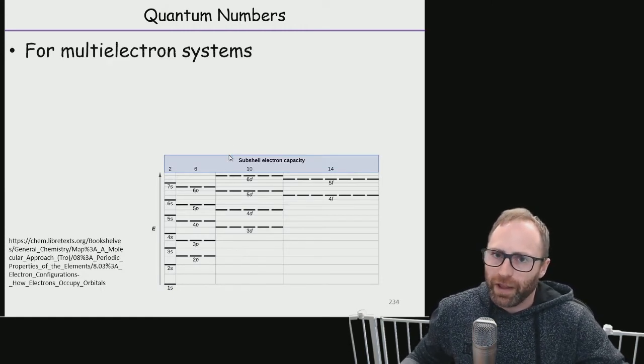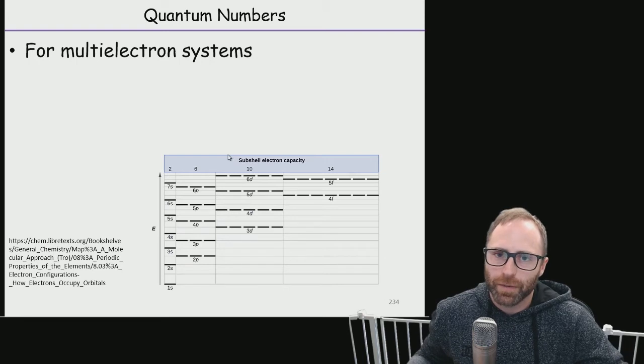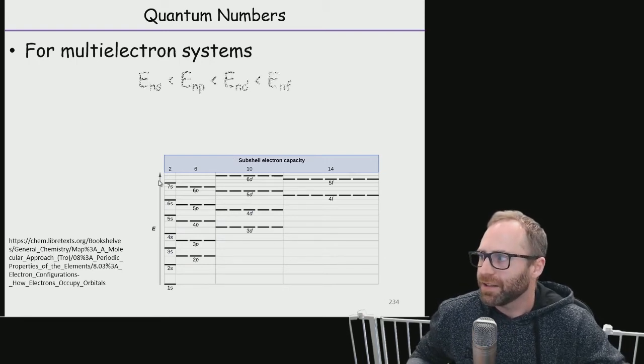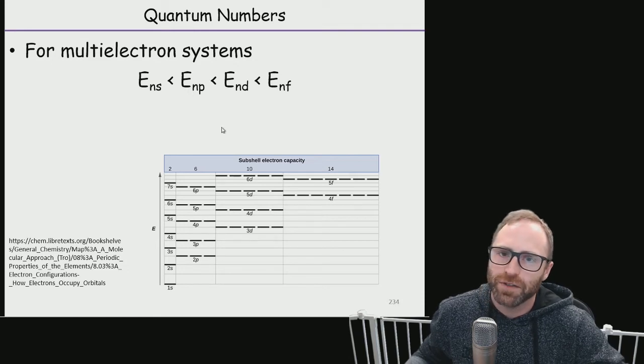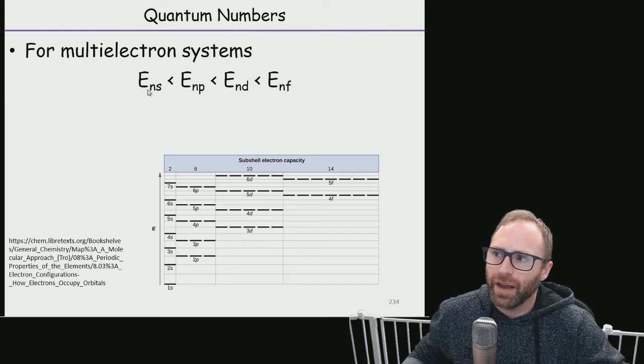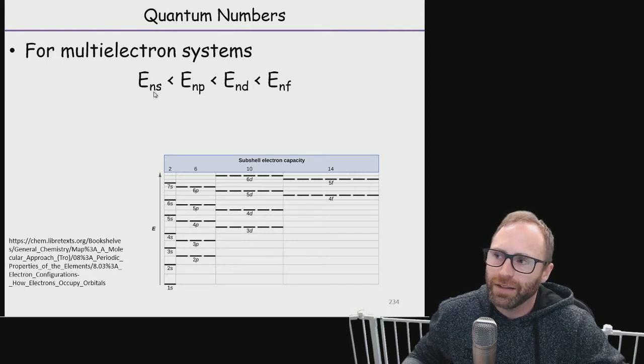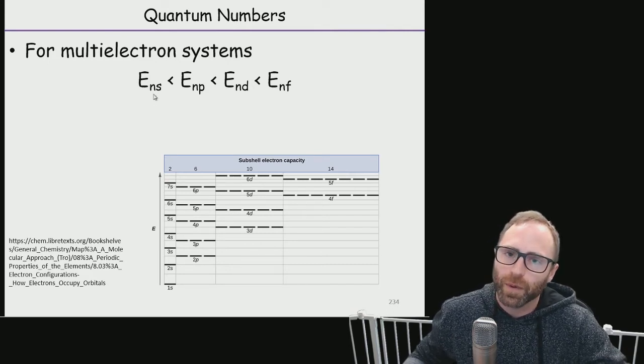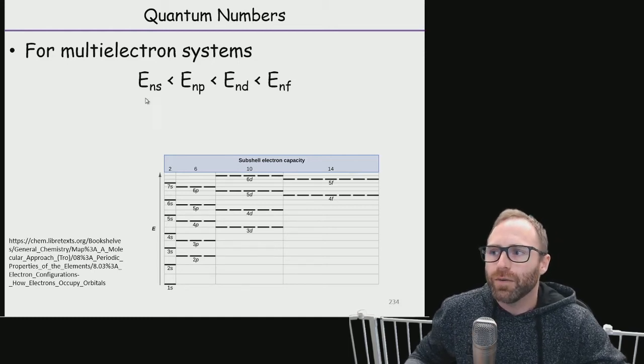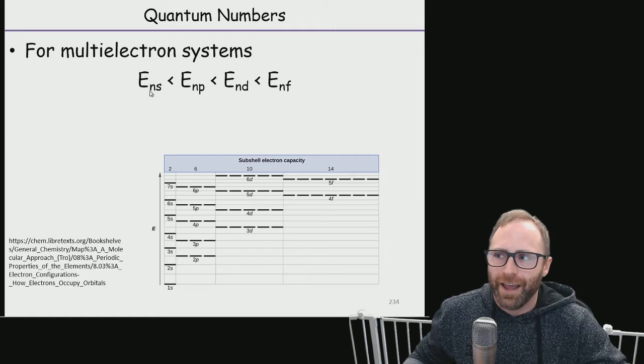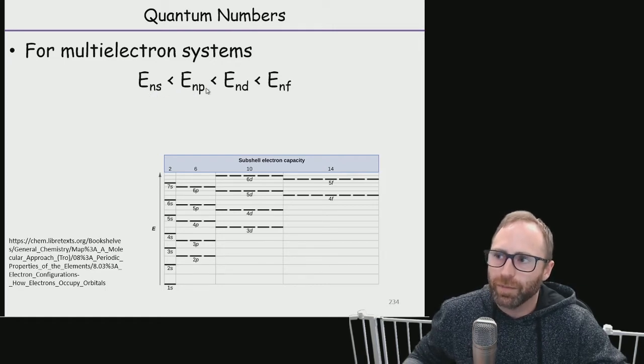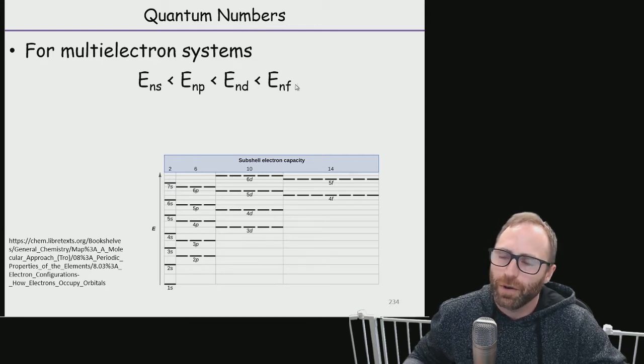Suddenly now that degeneracy breaks, and we have this general rule to go by. So electrons that have a principal quantum number n, and it's the same principal quantum number, we would normally say that the s subshell gets filled and is lower in energy before the p, which is lower in energy than the d, which is lower in energy than the f.